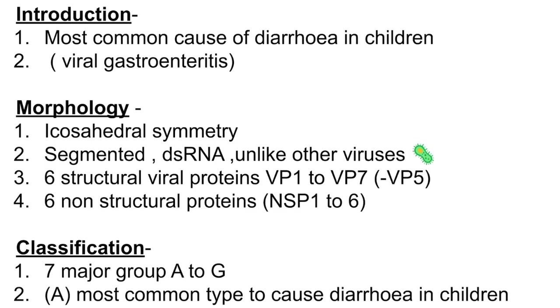Rotavirus is responsible for causing diarrhea in younger children, meaning it causes viral gastroenteritis. It has icosahedral symmetry and its genetic material is segmented, double-stranded RNA. Normally viruses have single-stranded genetic material, but rotavirus has double-stranded RNA. It also has six structural viral proteins, VP1 to VP7 (excluding VP4).